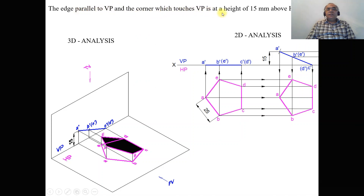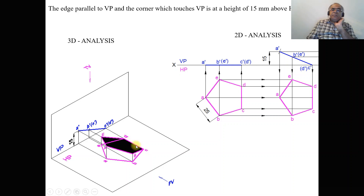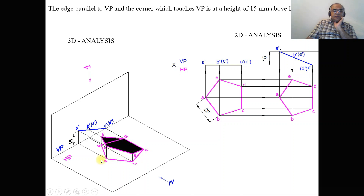The edge is parallel to VP, and the corner which touches VP is at a height of 15 mm above HP. So the edge rests on HP and the corner is above HP by 15 mm. This means the pentagon is rotated such that one edge stays on HP and the corner rotates until it is 15 mm above HP. From the top view the projected surface gives a small pentagon ABCDE, and from the front view you still get a line since the surface remains perpendicular to VP. A dash B dash C dash is visible, D dash E dash is invisible.